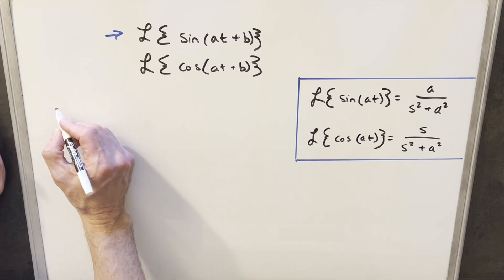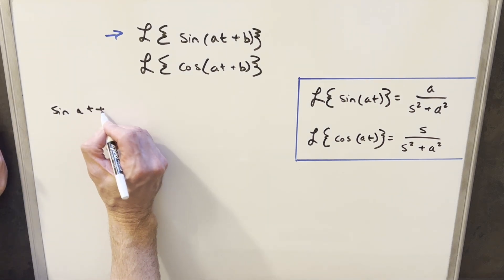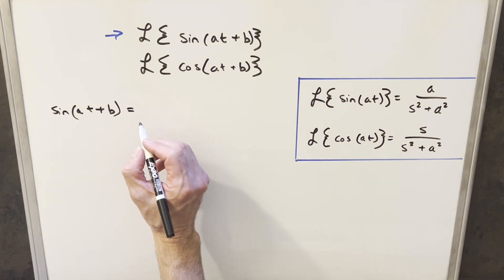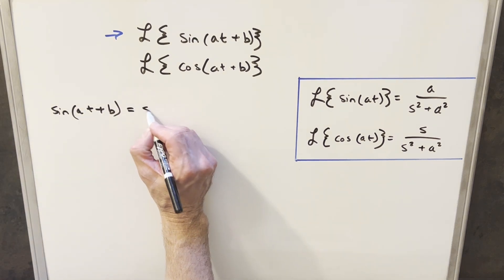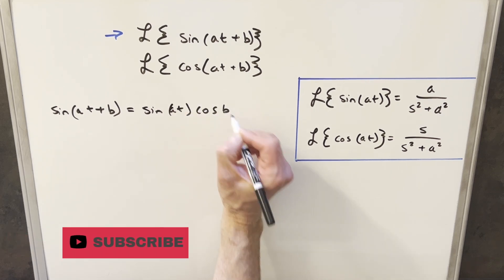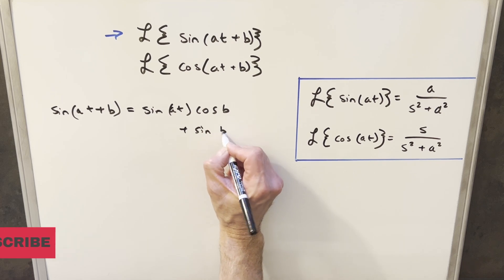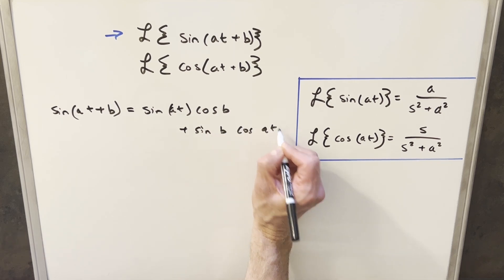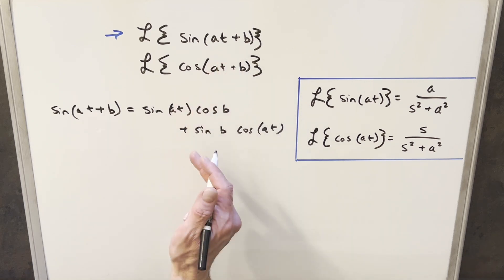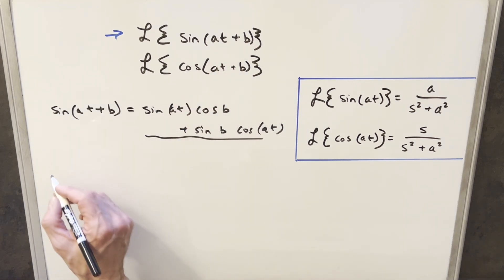What I'm going to do to begin is use the angle sum formula. So if we look at just sine of at plus b, we can actually rewrite this as sine at times cosine b plus sine of b times cosine at. So then getting to our Laplace transform, instead of using sine at plus b, I'm going to use all this.